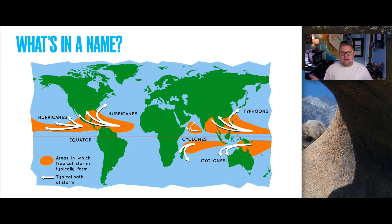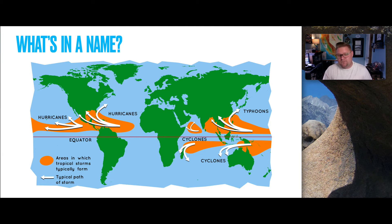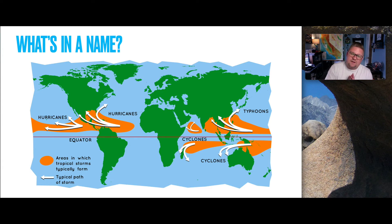Here's a diagram showing a map of the world with the areas where these storms typically form and their typical paths. Because of the Coriolis effect, storms deflect to the right in the Northern Hemisphere and to the left in the Southern Hemisphere, giving us that clockwise and counterclockwise motion.